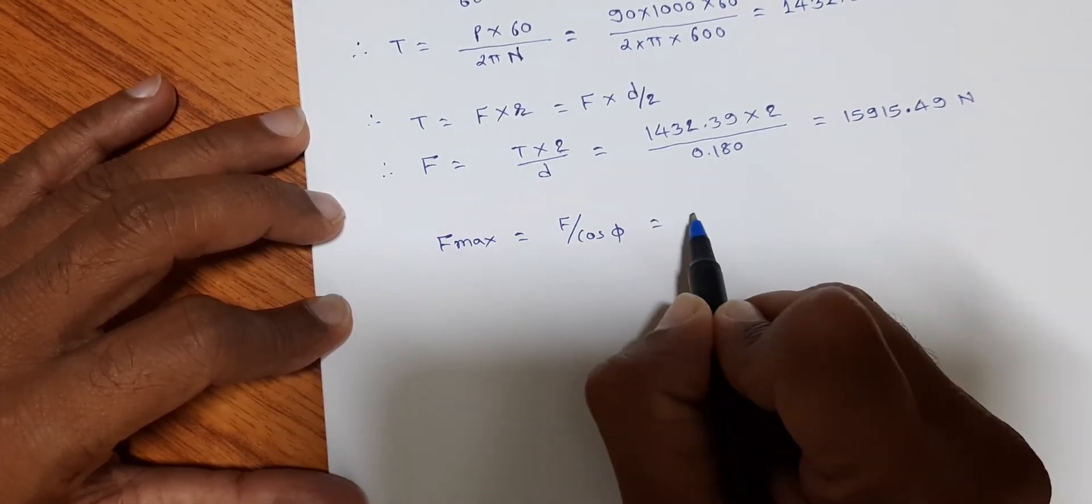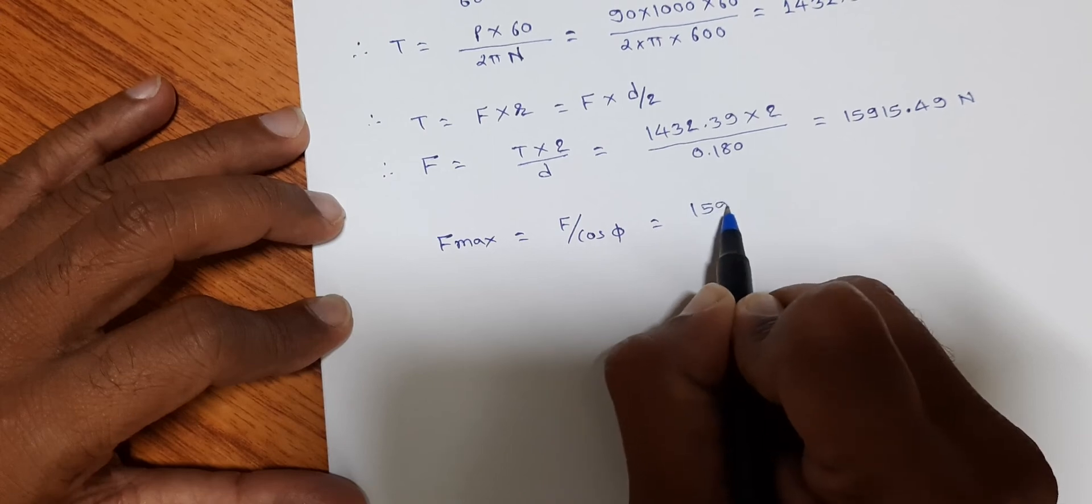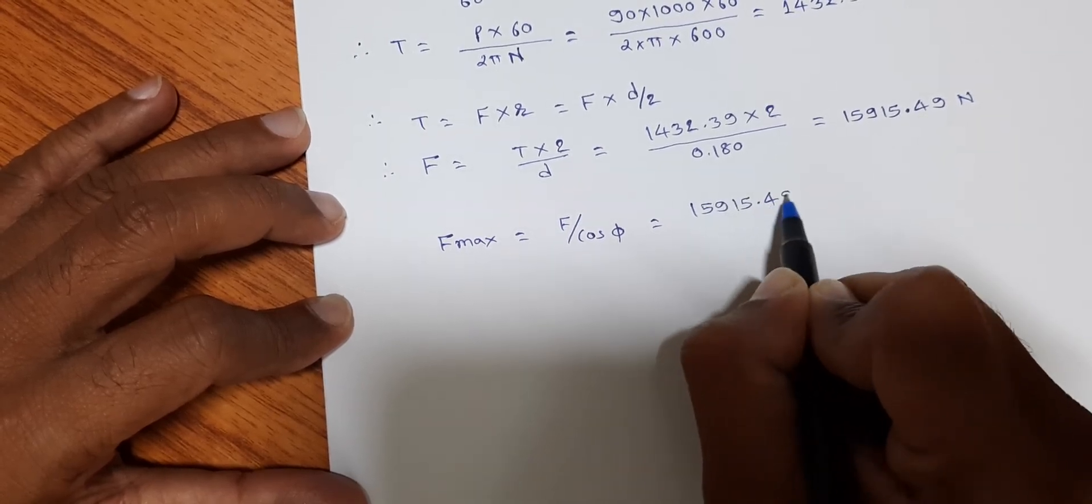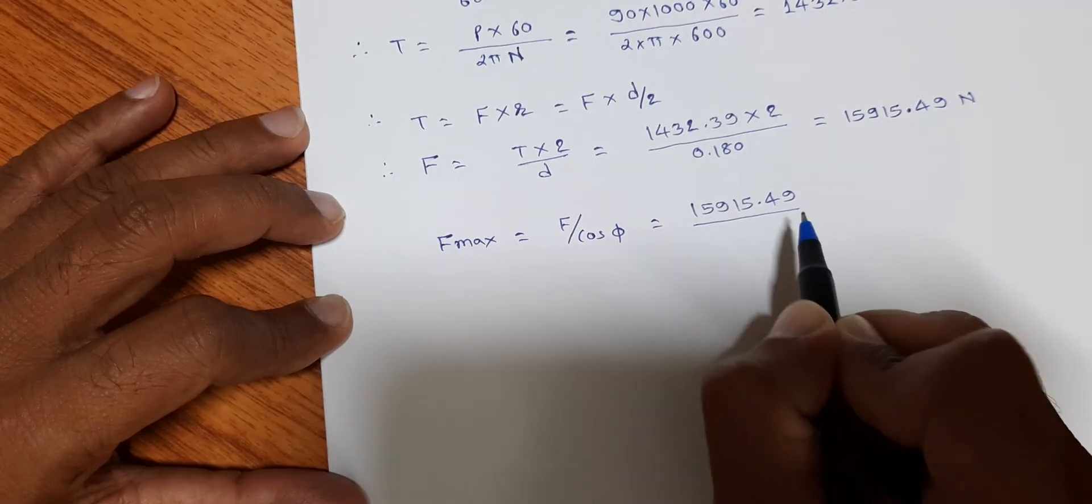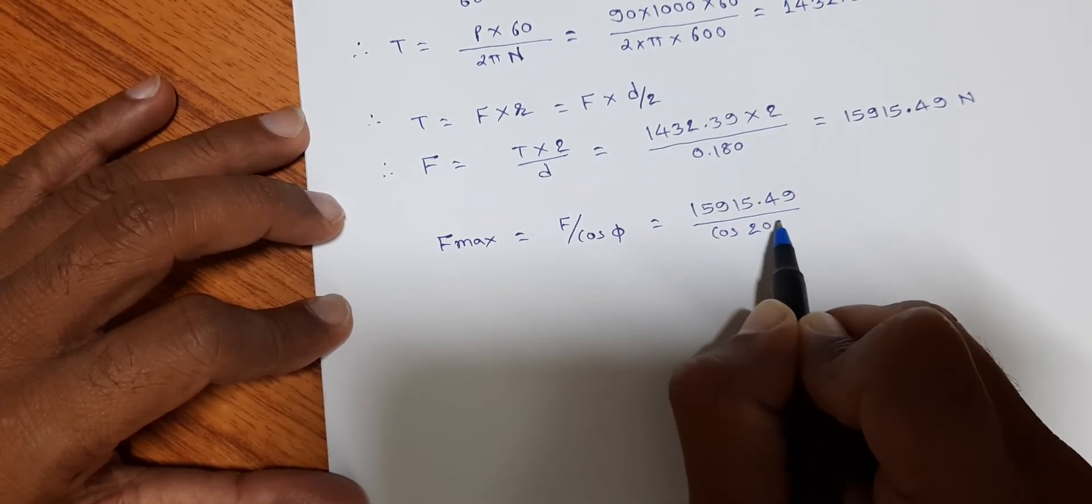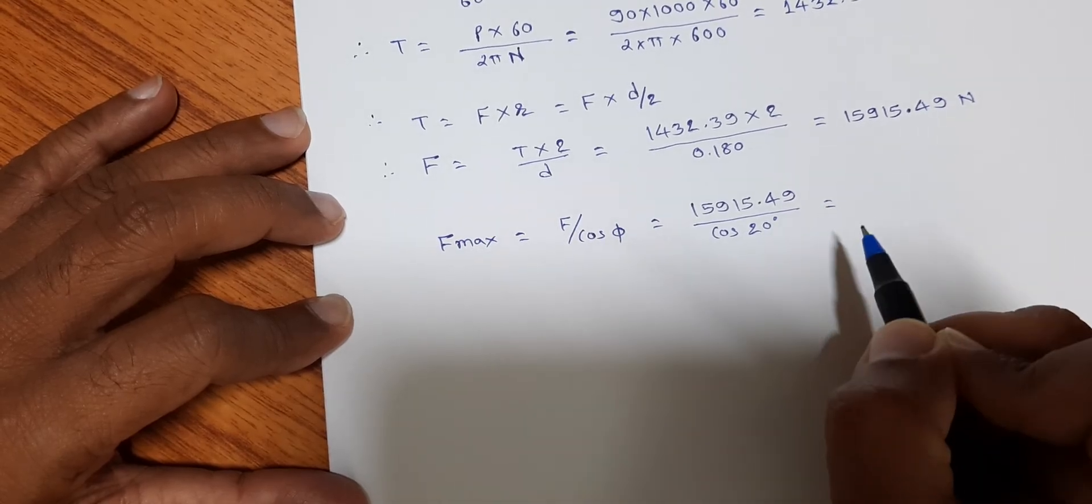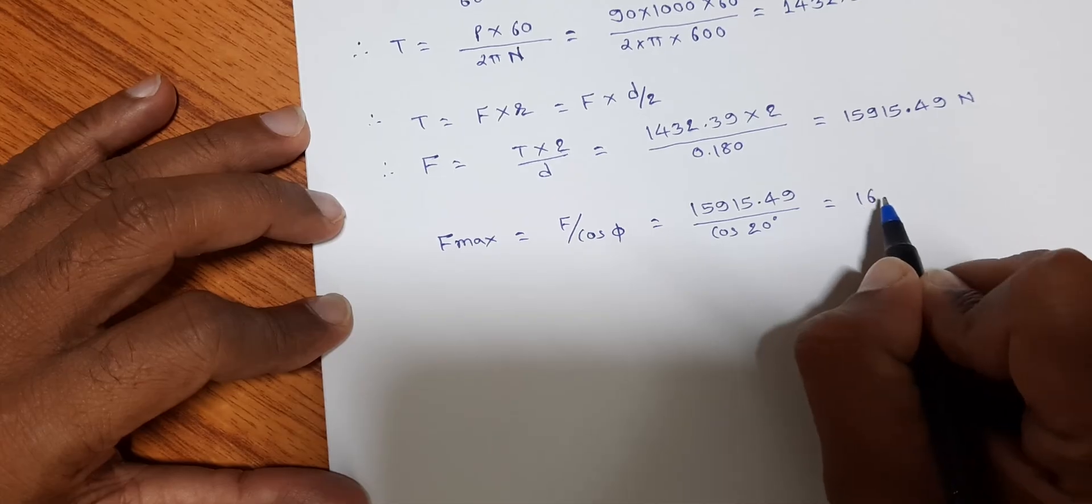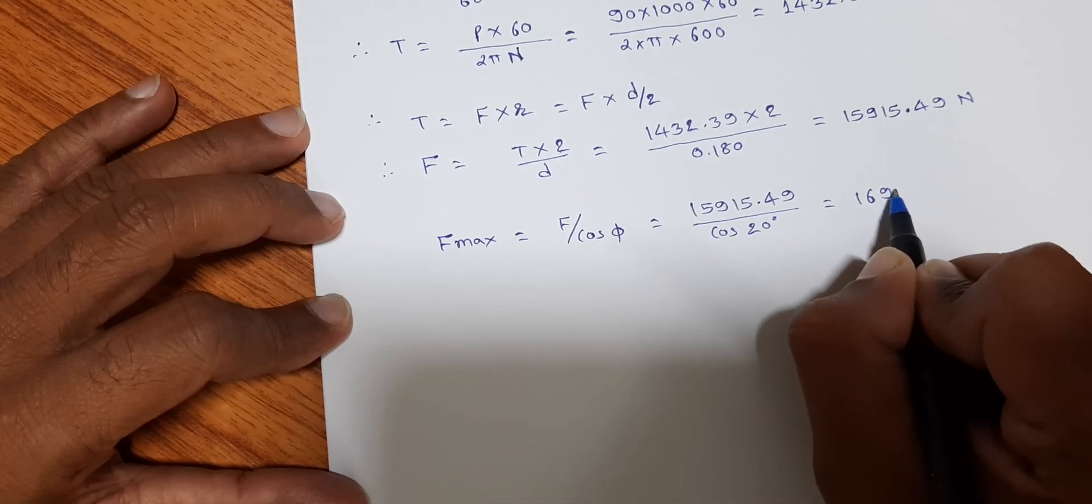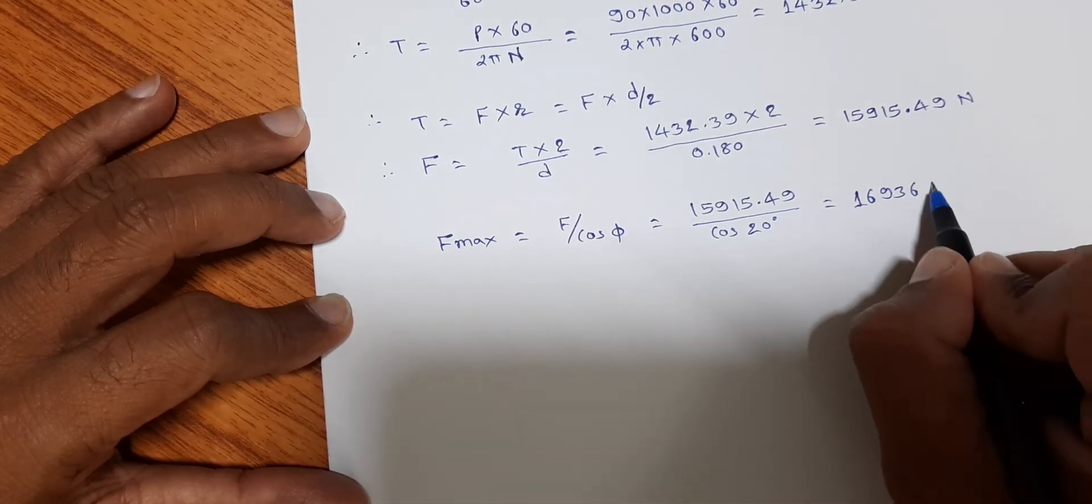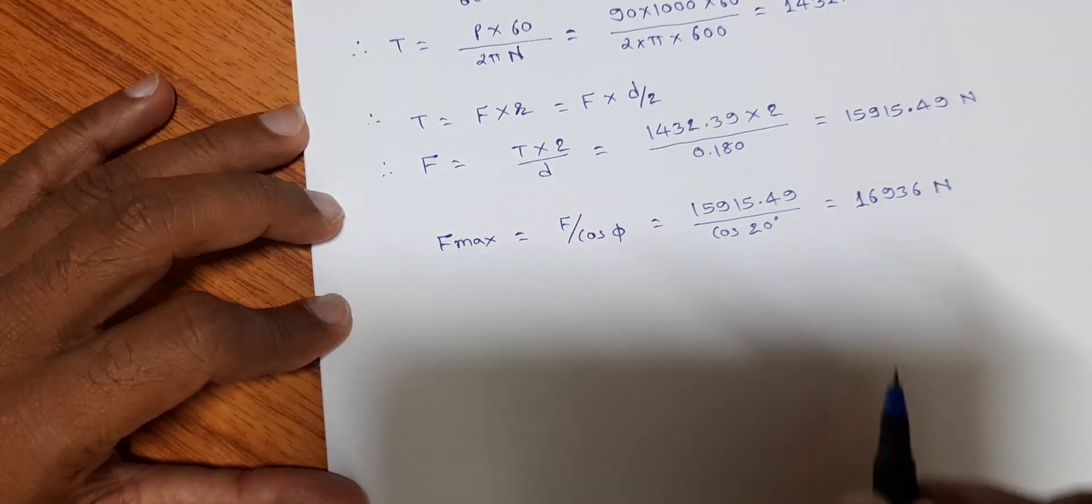That is equal to 15915.49 divided by cos of 20 degrees. It gives the value equal to 16936 newtons.